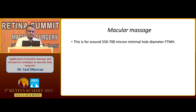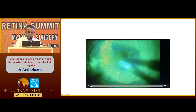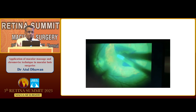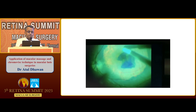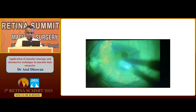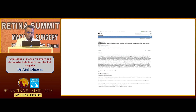The second technique is macular massage, used for around 550 to 700-micron holes. The aim is to relax the retina towards the center. It was started by Alpha Tov, then modified by Dr. Manish. Then Dr. Debulal and I started using the same technique with a silicone-tip cannula for relaxing the ILM toward the center. In this case, you can see three- and two-year post-op results of the macular hole. We published this — 12 cases done till last year, average minimal hole diameter 590 microns, 11 type-1 closures, 1 type-2 closure, and 7 cases had more than 2-line vision improvement.